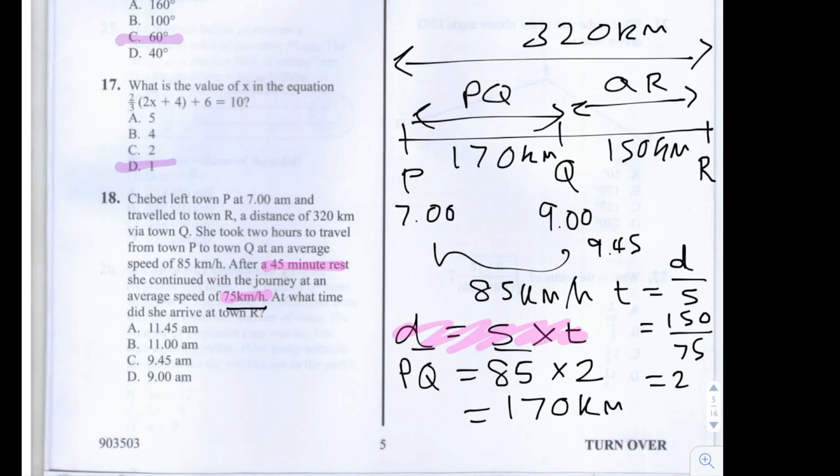It took her 2 hours to travel from Q to R. We add 2 hours to 9.45, we get 11.45. She arrived at R at 11.45am. The answer is A, 11.45.